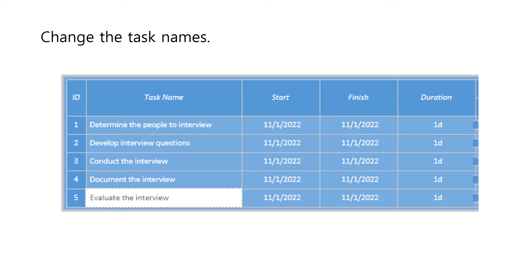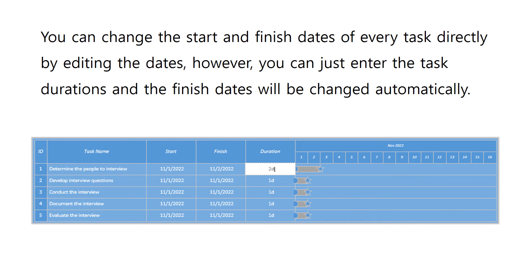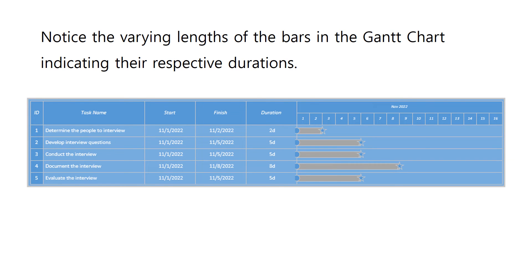Let us now change the task names. You can change the start and finish dates of every task directly by editing the dates. However, you can just enter the task durations and the finish dates will be changed automatically. Notice that if you change the task duration, the task bar on the Gantt chart also changes. Notice the varying lengths of the bars indicating their respective durations. Also notice that all tasks are starting on the same date, since we did not yet link the tasks to each other.